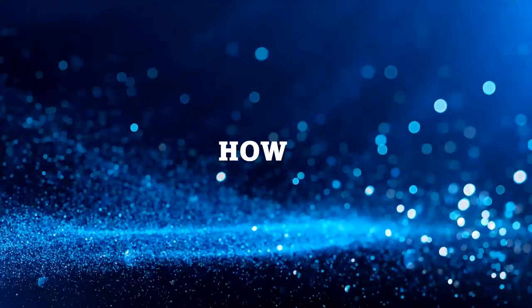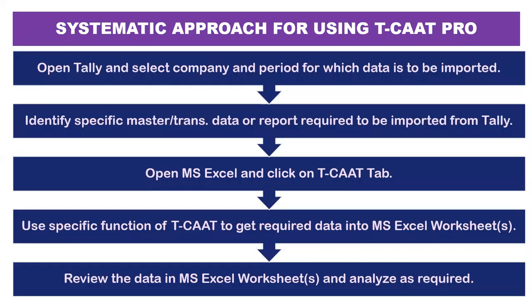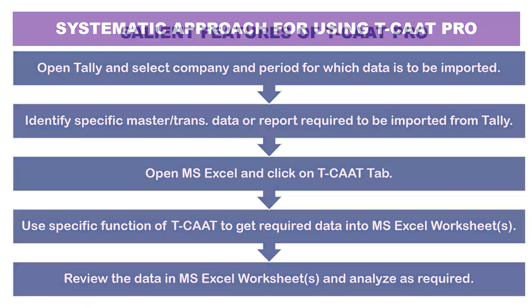The systematic approach for using TCAT Pro: first, open Tally and select the company and the period for which data is to be imported. You can open Tally directly from TCAT Pro or open it directly. Then identify the specific information you require — whether masters, transaction data, or reports and registers. Open MS Excel, click on the TCAT tab, use the specific function to get required data into Excel. Depending on data volume, this takes a few seconds to a few minutes.